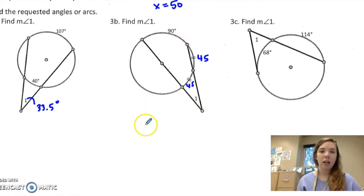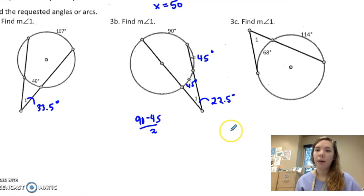So then I can do 90 minus 45 over 2, which should be 22.5 degrees.